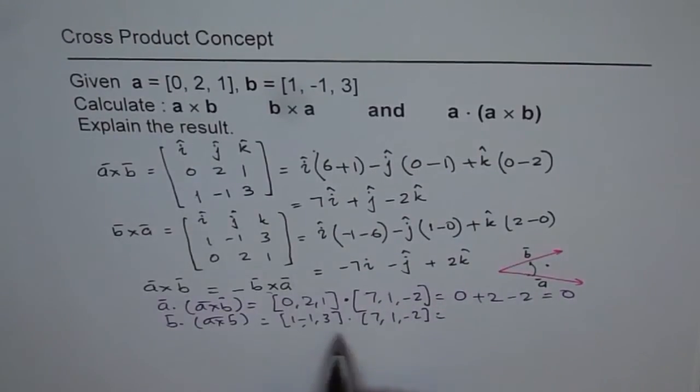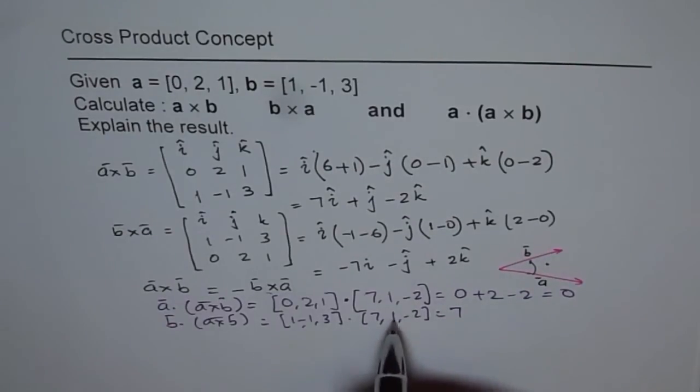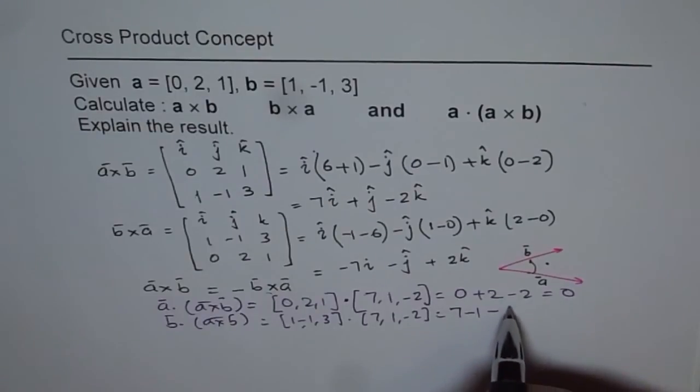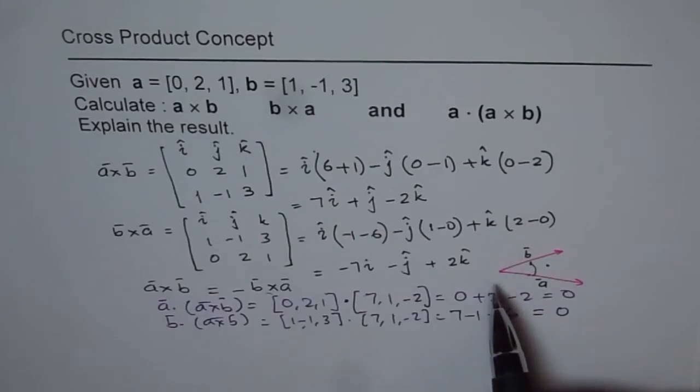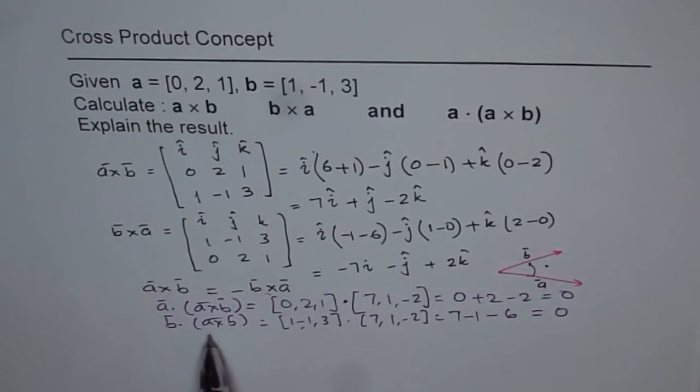What do we get? 1 times 7 is 7, then minus 1, minus 1, and 3 minus 2 is minus 6, which is also 0. So we see that A dot and B dot the cross product of A and B, both are 0.